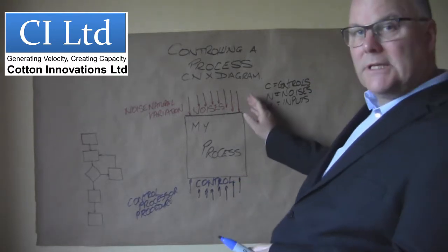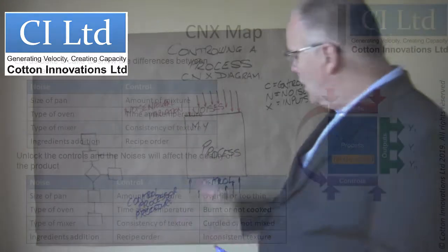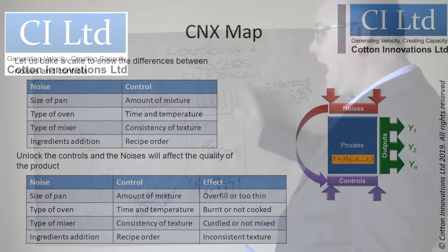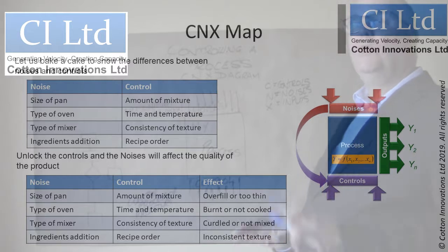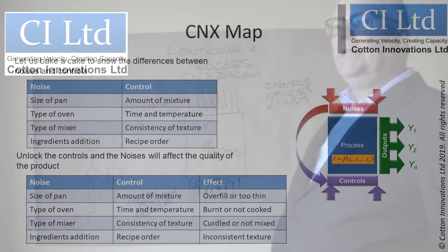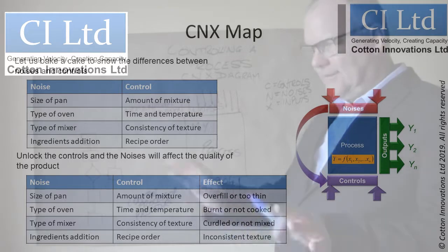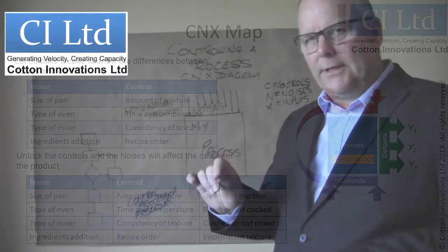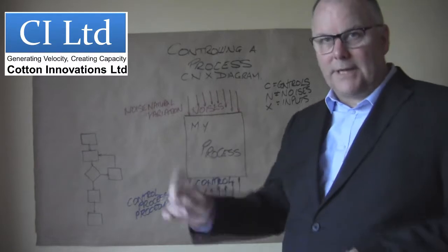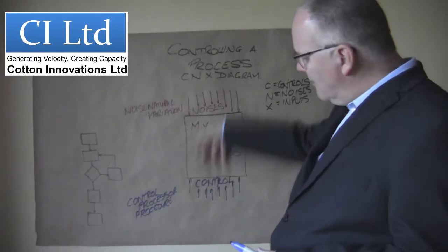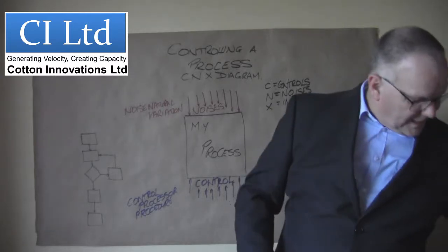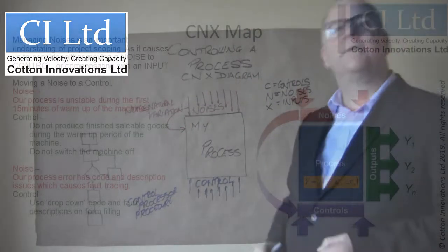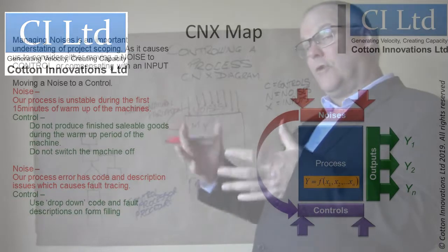Every one of these noises has a singular or dual control that locks that noise. Now if you have a noise which has no control, or you let the control go — for example, we decide we're not going to have ways of working, we're not going to have standard operating procedures, we're not going to train our operators — the ways that those operators do things now become significant in my process. And the noise, instead of being contained by this control and held in check, now starts to drive my process.